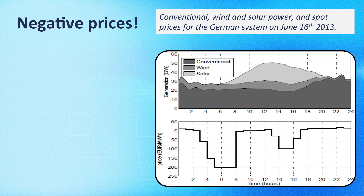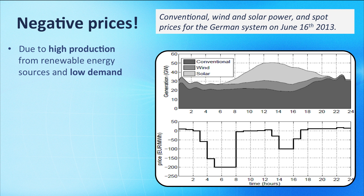Moreover, negative electricity prices are likely to emerge where the power system as a whole is not flexible enough, hence it is hard and costly to adapt to changing conditions on the demand and on the supply side. A negative price indicates that power generation companies are willing to pay the consumer when they buy energy. This is mostly due to a combination of high production from renewable energy sources, which are generally characterized by very low or zero marginal generation costs, and low demand. Negative prices generally occur on very sunny and windy non-working days with low demand.